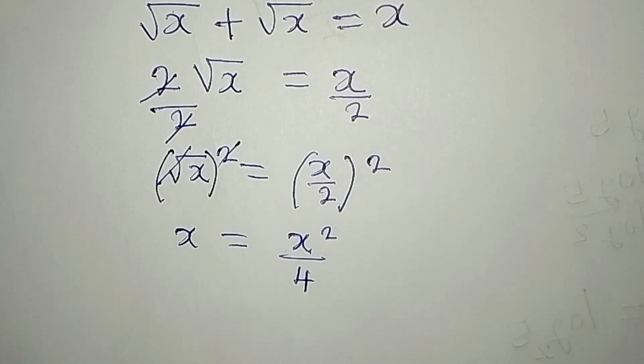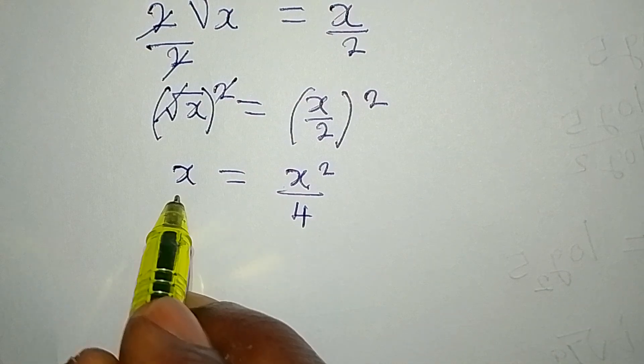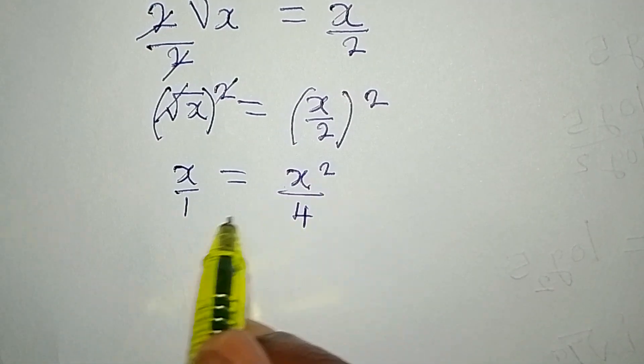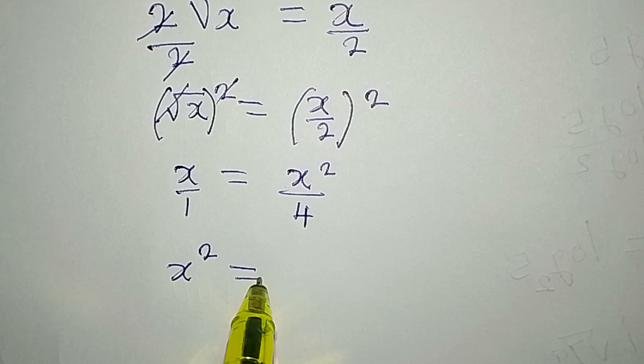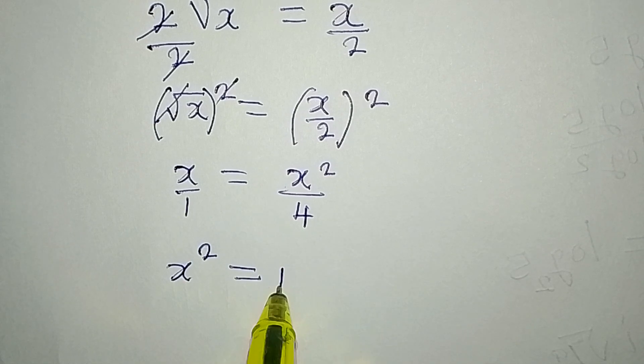Now we cross multiply. Remember this is over 1, so this will multiply this. We have x squared and it will be equal to 4 times x, which is 4x.